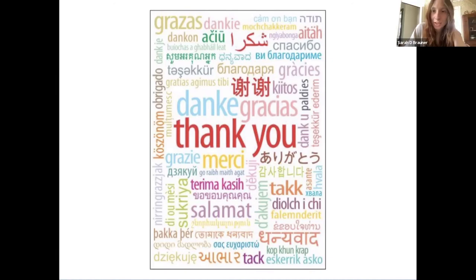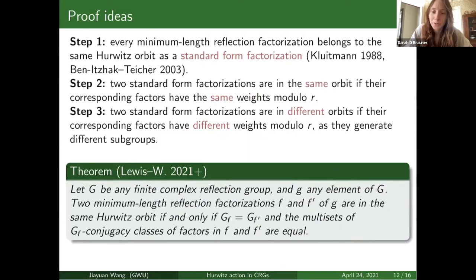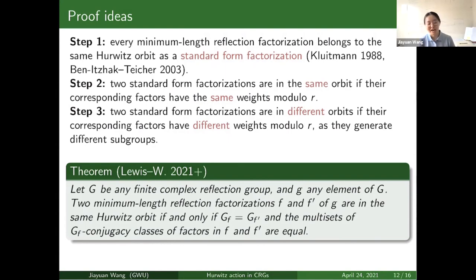Audience question: Is there any way to generalize parts of what you did to all complex reflection groups? Response: The proof for G(m,p,n), the infinite family, is very specific to that family. For the 34 exceptional ones, we are essentially doing brute force computation — there are no clever tricks. The dream is to find a uniform proof that can apply to all complex reflection groups, but so far it's very case-specific.